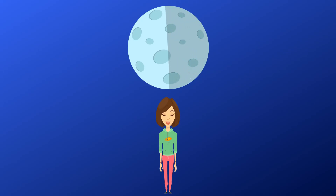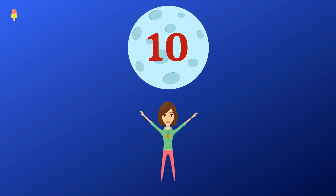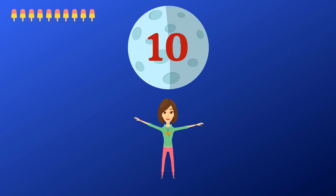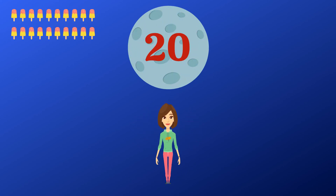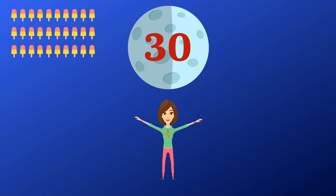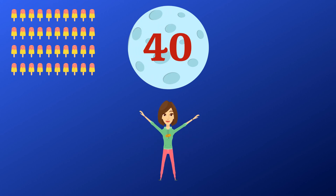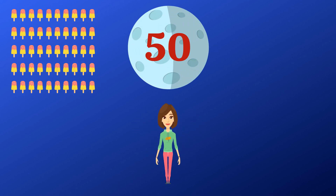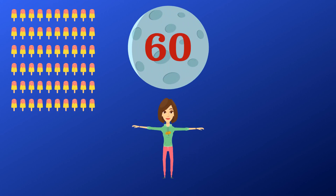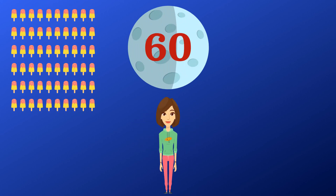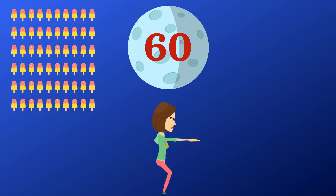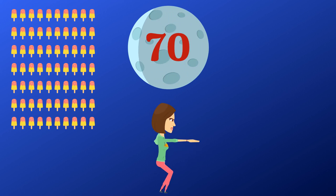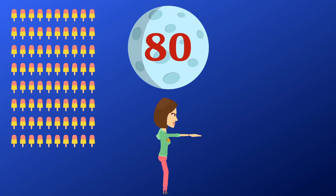Let's count by doing jumping jacks: 10, 20, 30, 40, 50, 60. Now let's count by doing squats: 70, 80.